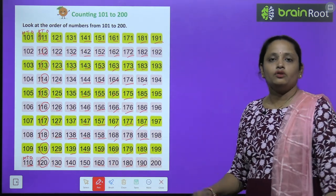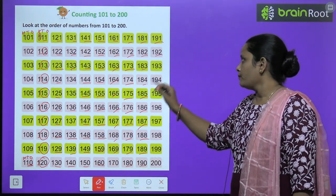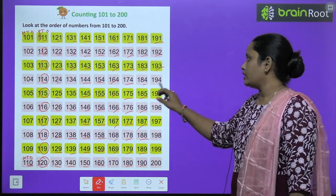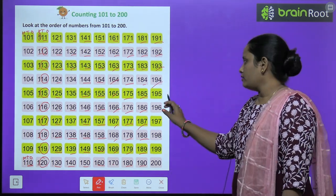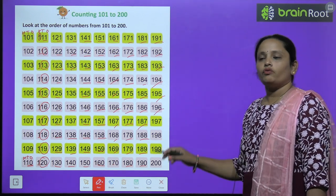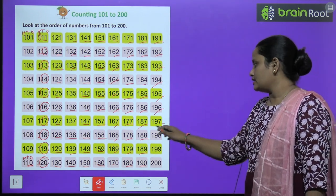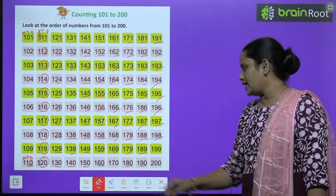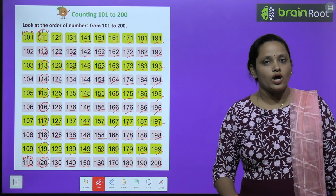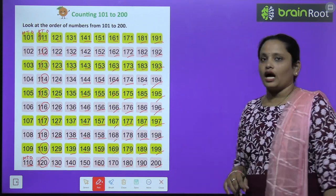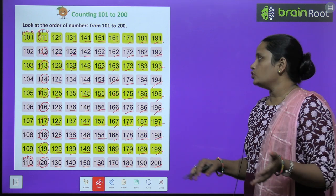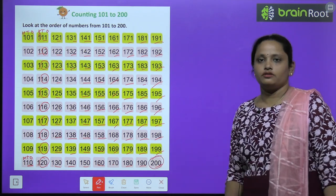191, 192, 193, 194, 195, 196, 197, 198, 199 and 200. So these are the countings from 101 to 200.